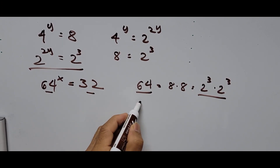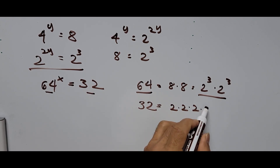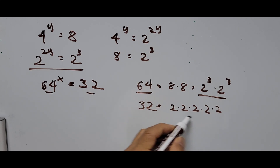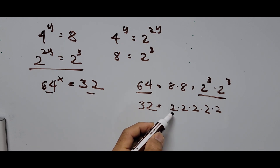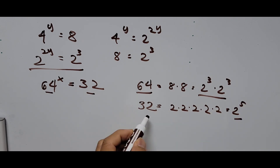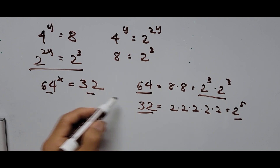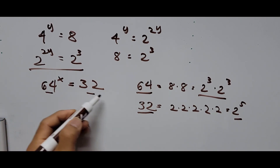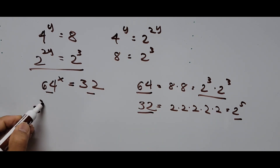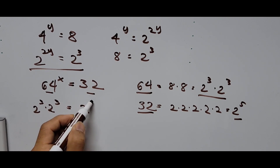The constant 32 can be written as 2 times 2 times 2 times 2 times 2, which is multiplying 2 by itself 5 times. So in exponential form, that is 2 raised to the 5th power. Going back to the original exponential equation, we express 64 and 32 in exponential form: 2 raised to the 3rd power times 2 raised to the 3rd power, all raised to the x power, equals 2 to the 5th power.